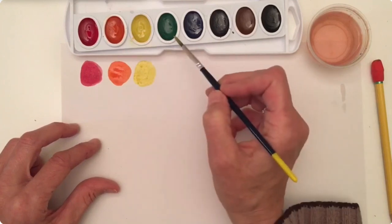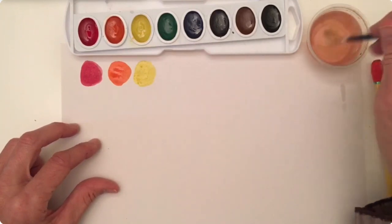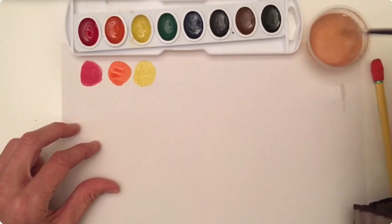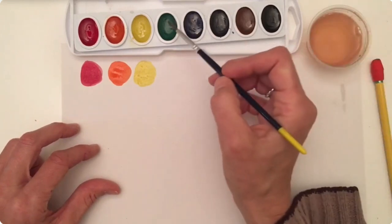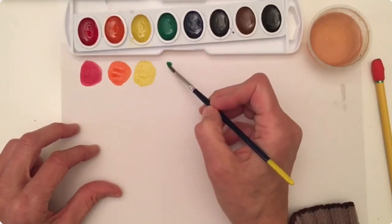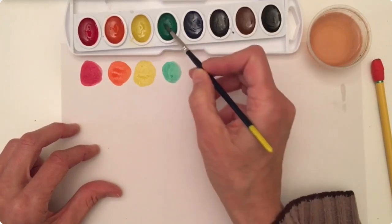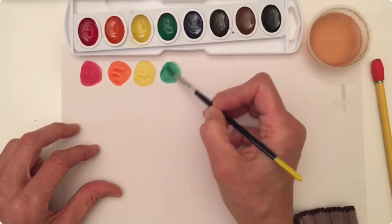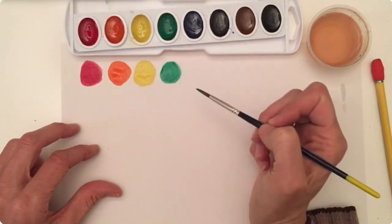Now I don't want to take yellow into my green. So I'm going to clean, clean, clean. Now I can dip into my green paint and activate it. There's my green paint. Oh, it's beautiful.